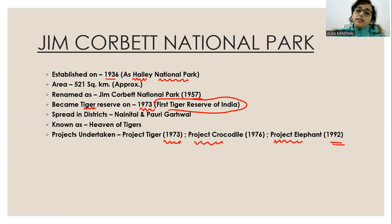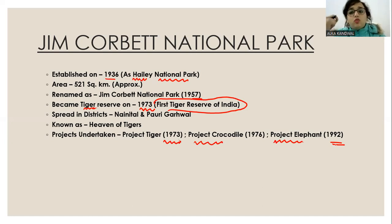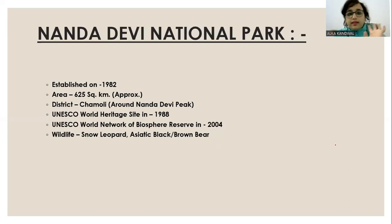The name in 1936 was Hailey National Park. The name changed to Jim Corbett National Park in 1957. These are the important dates — you have to make proper notes. When you keep on revising, it will fit in your mind.